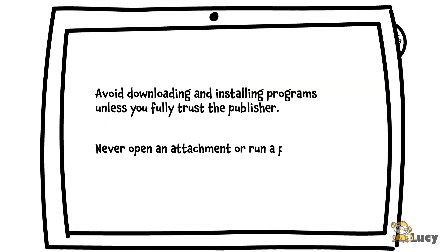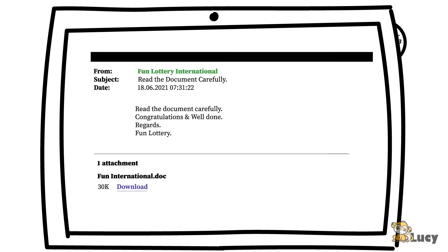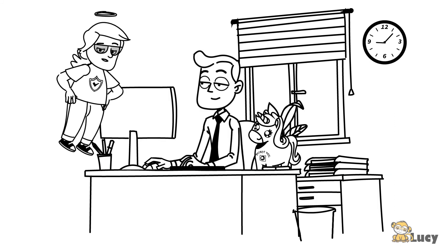Email attachments are a very common way for people to accidentally download a Trojan. But these phishing emails can be difficult to identify. Always be cautious about attachments you receive with unexpected emails, even if they appear to be from someone you know.